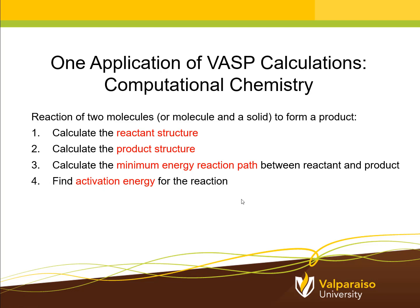What's an example of an application of VASP in a research project? The one I use in my research quite often is sometimes called computational chemistry. Imagine two molecules — or perhaps a molecule and a solid — that come together and react: some chemical bonds are broken, new bonds are formed, and there's a product molecule that emerges. VASP would be useful to calculate the reactant structure, the product structure, and ideally the intermediate steps between them. Chemists call this pathway the minimum energy reaction path. If we can find this path, it allows us to determine the activation energy for the reaction — a property that can be measured experimentally, so we can test our calculations against experiment.